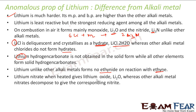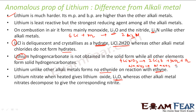Lithium nitrate when heated gives lithium oxide. The other alkali metals give the corresponding nitrite. For the reaction: lithium nitrate on heating gives Li₂O and NO₂ gas. But for other alkali metals — for example, sodium nitrate on heating gives Na₂O plus oxygen, and potassium nitrate gives potassium nitrite. So there is a difference in the way lithium reacts — it gives oxide, while others give nitrite.